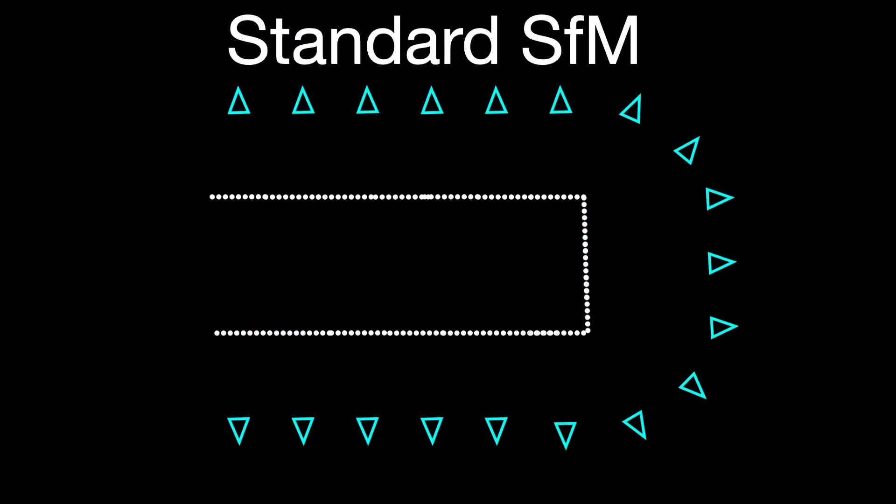Normally, structure from motion establishes constraints between pairs of frames which mutually observe the same part of the scene, by finding and matching feature points from each frame.